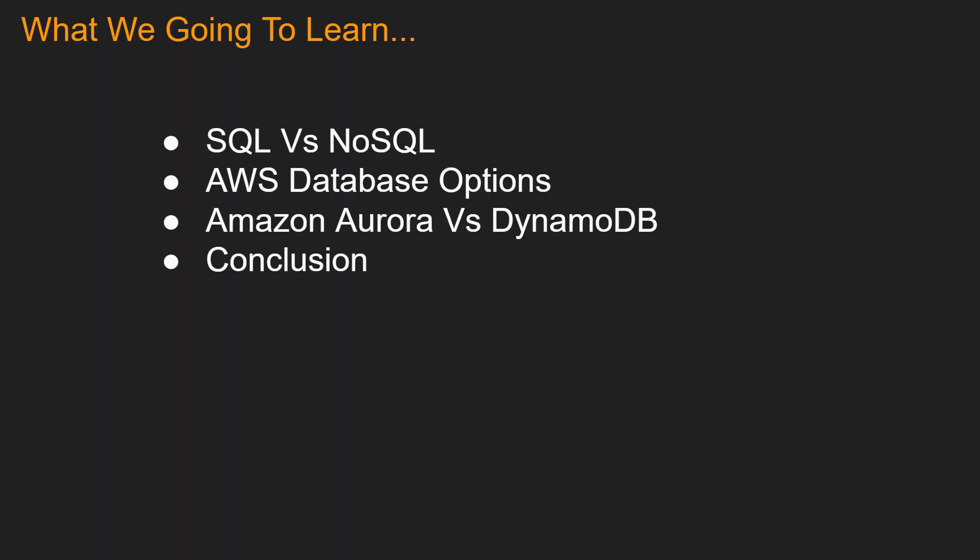In this video, we are going to take a look at this very commonly asked interview question. We'll learn about NoSQL versus SQL, then look at the databases in AWS, then go over the differences of two hallmark databases in AWS: Aurora versus DynamoDB. And finally, we will go over the conclusion. Let's get started.